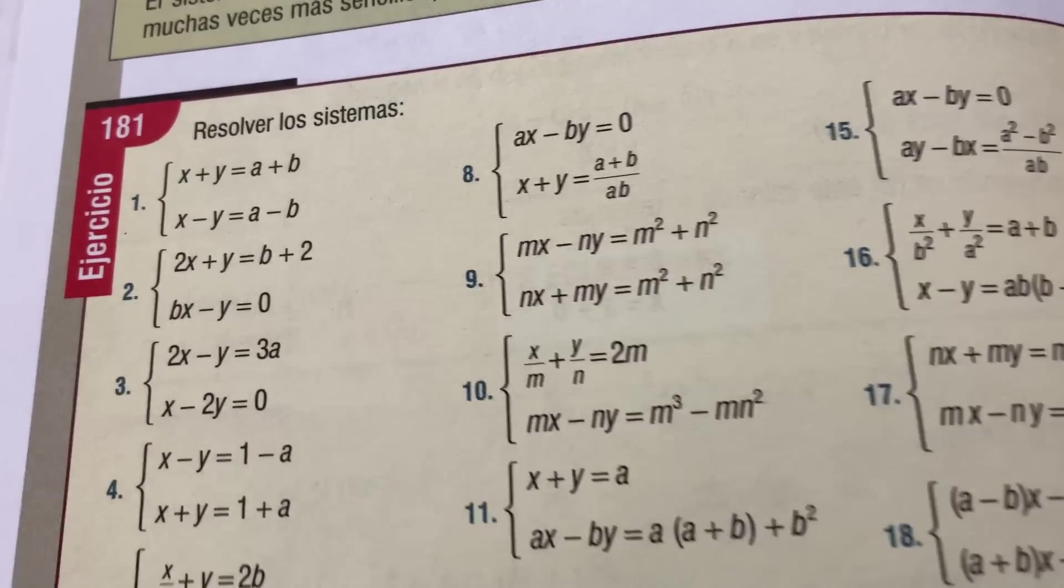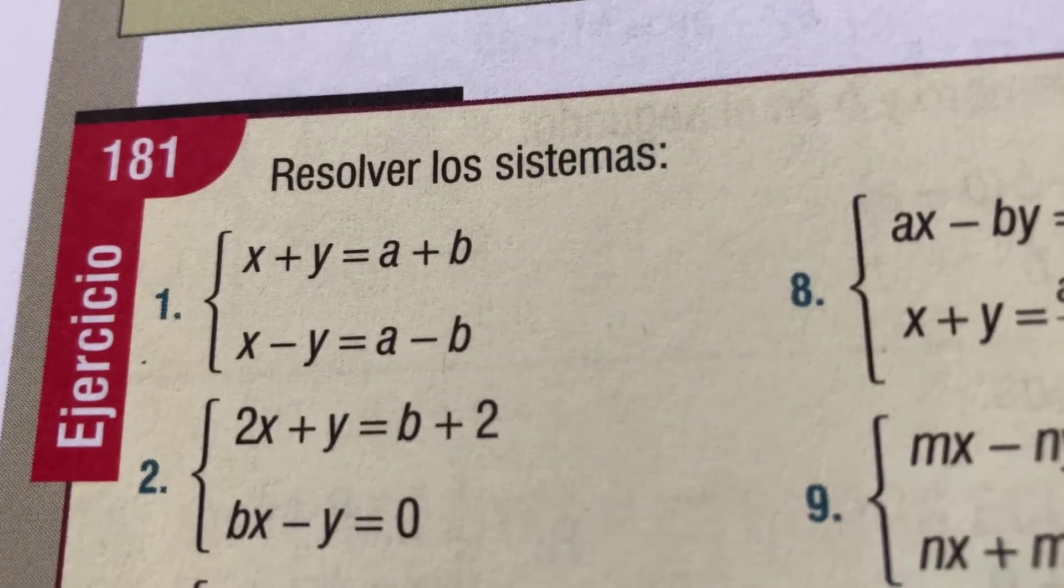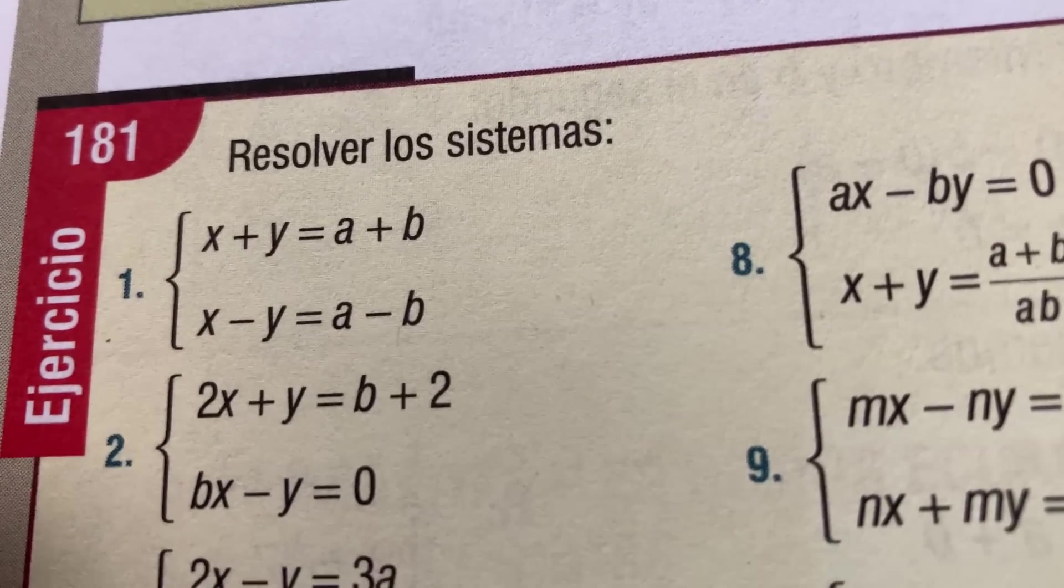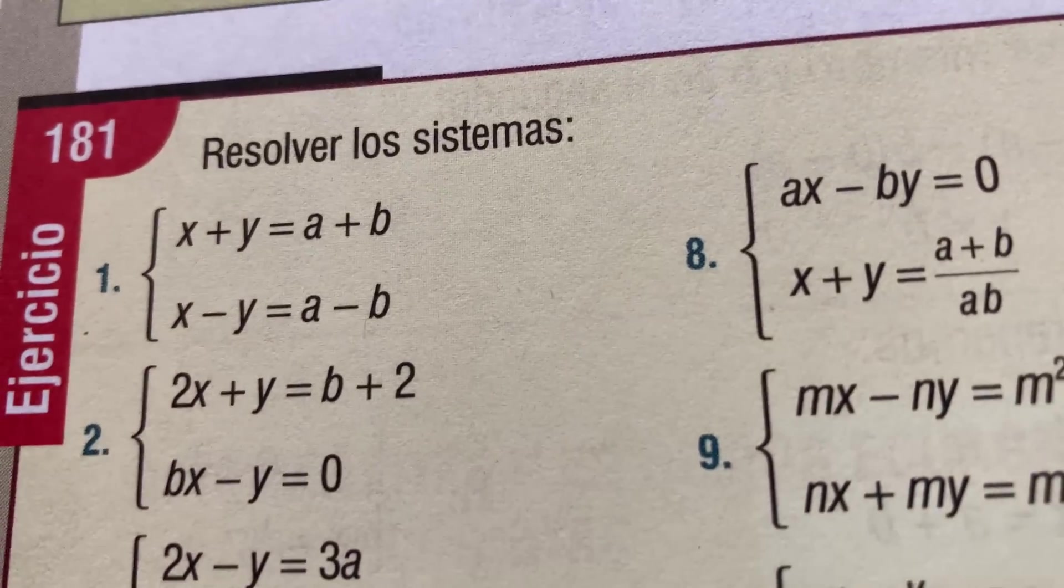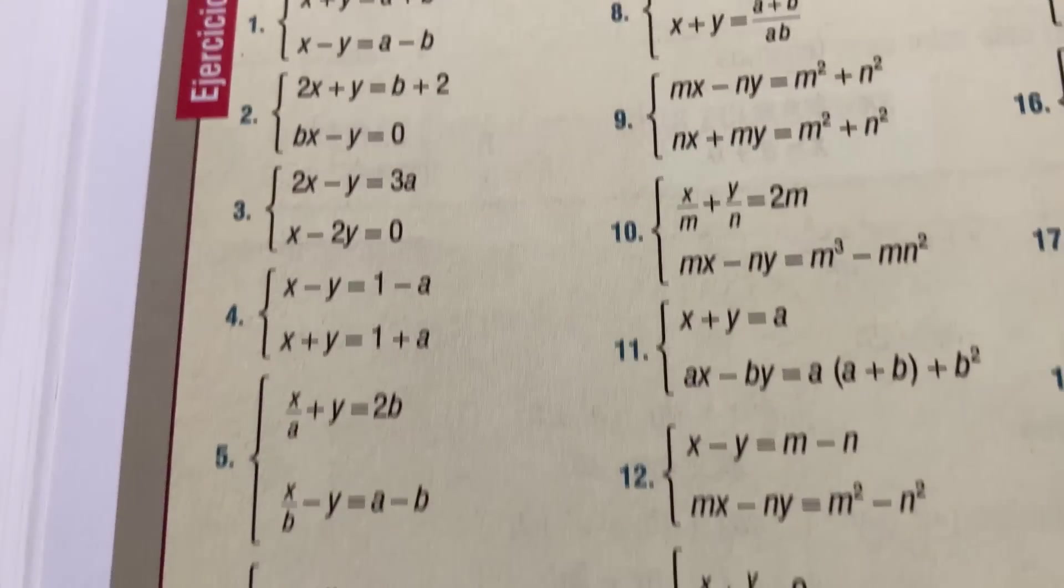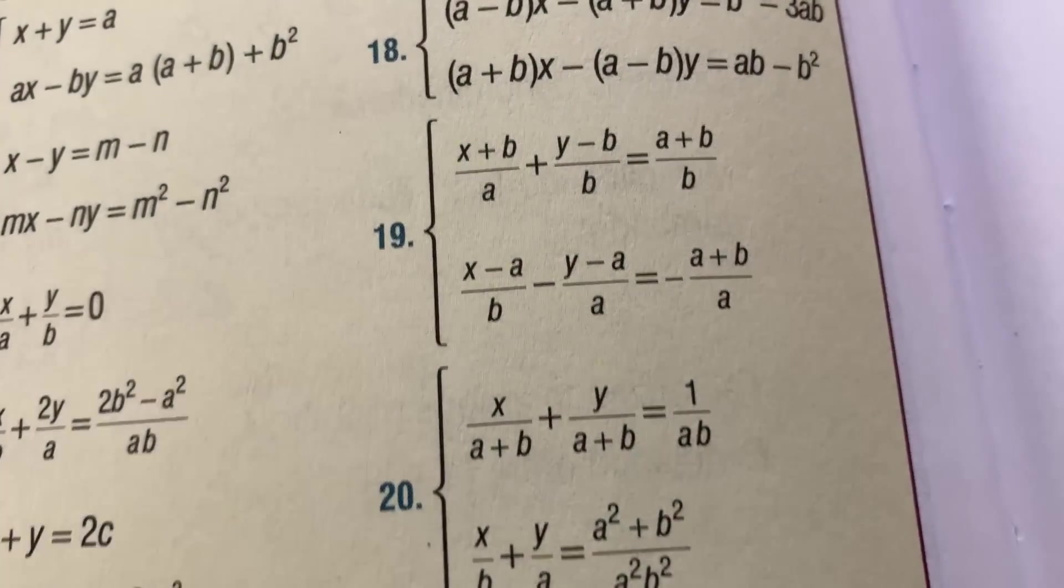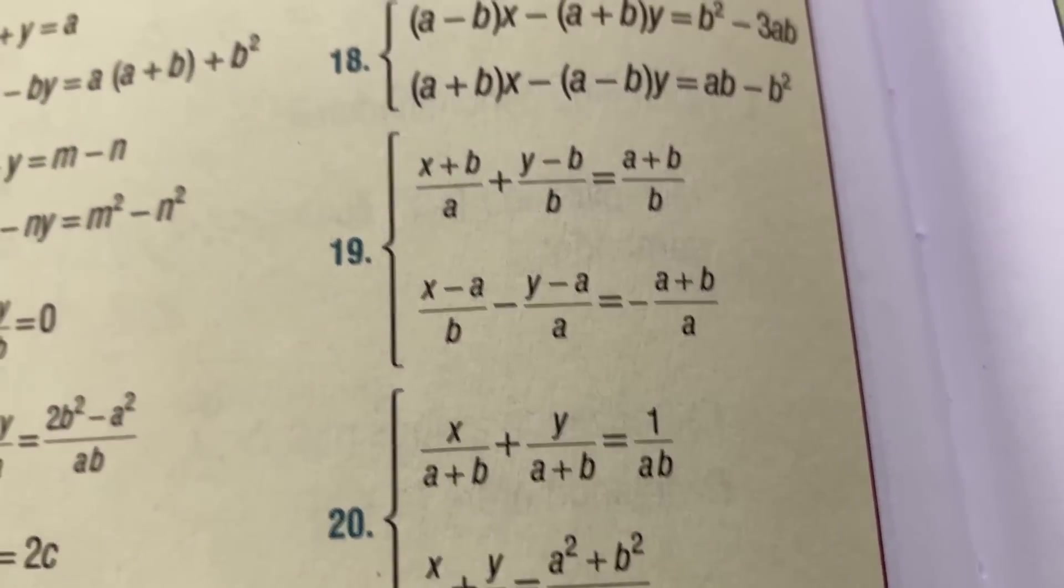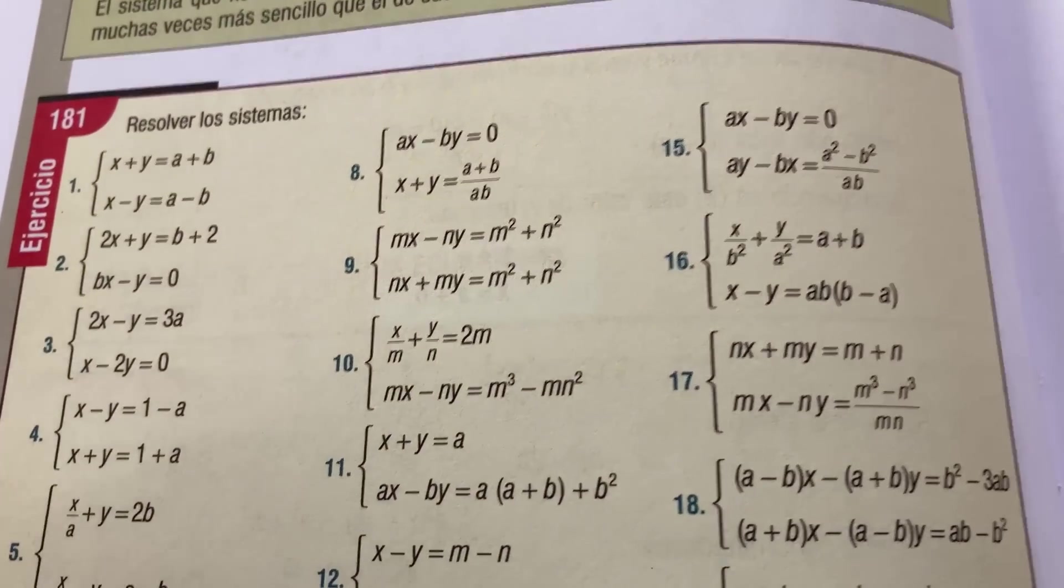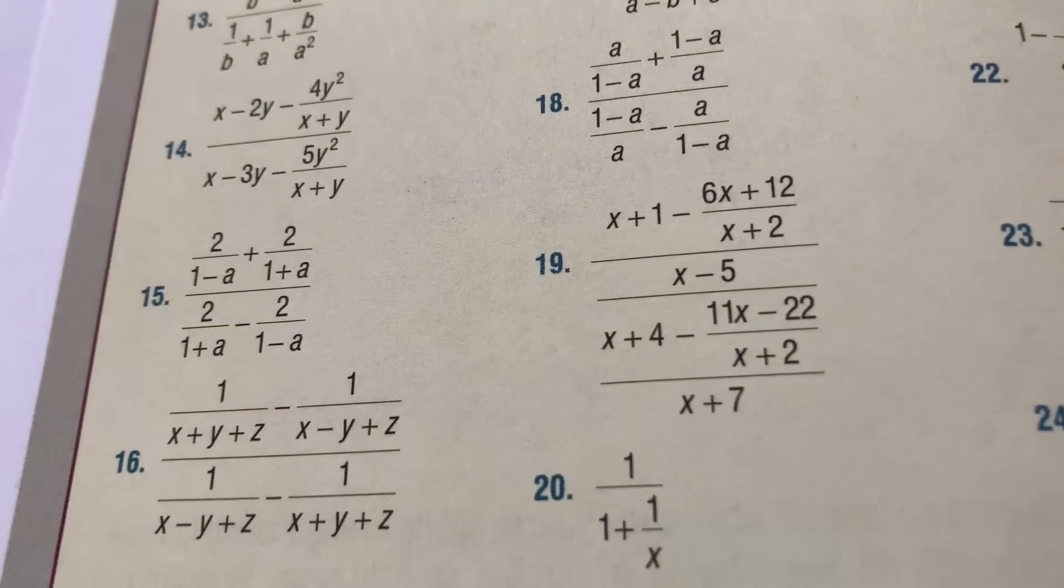They're getting more challenging. They have variables in there, a and b, just to make it even more confusing. These can get really fun. I've done several of these problems from exercise set 181. Yeah, they get significantly more challenging. You start here like with number one, and you can see right away that you can add them, so you get x + x which is 2x, y + (-y) which is 0, so you get 2x = 2a. But look over here, these are really fun problems.